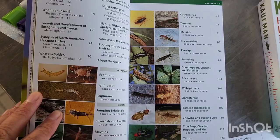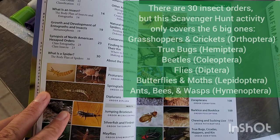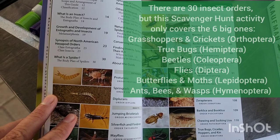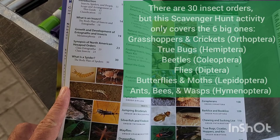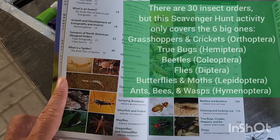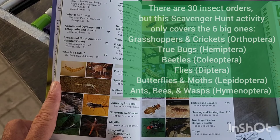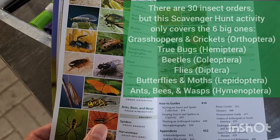The way the Insect Order Scavenger Hunt works is that you divide your youth into a handful of groups. Each group will be responsible for finding examples of an insect order and then making a brief presentation about that order. There are about a million different kinds of insects in the world and about 15,000 kinds in Kentucky, but they're all divided into about 30 different orders. Most insects are found in five or six orders, which is what this activity focuses on.